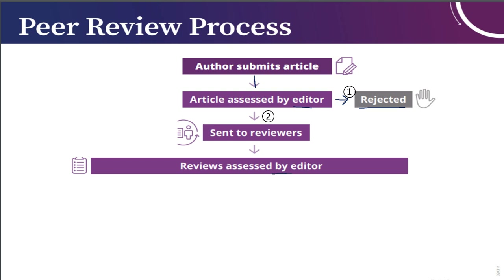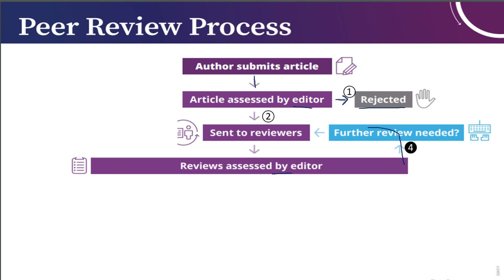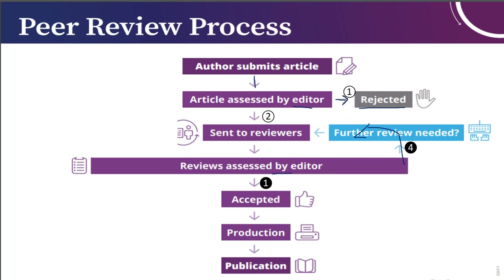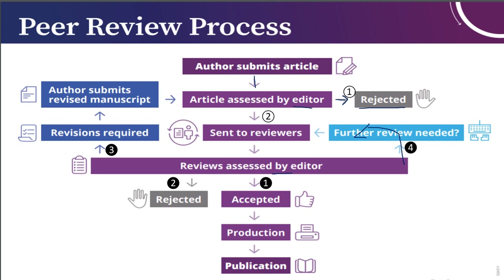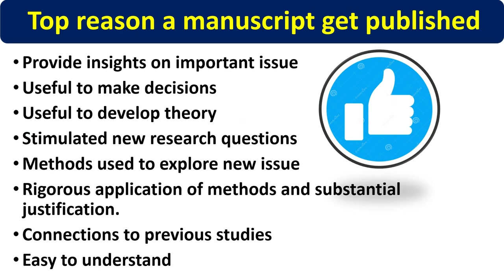Based on reviewers' comments, the editor decides whether the article should be reviewed again, accepted, rejected, or sent for revision. If accepted, it goes to production and then publication. If revision is required, the comments are sent to the authors, who revise the manuscript and resubmit to the journal website, and the same review process begins again.